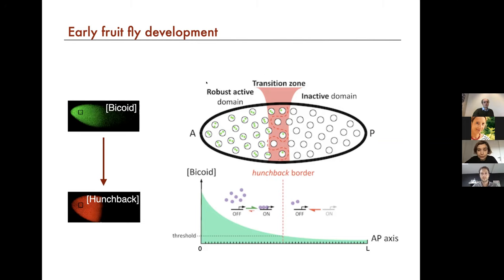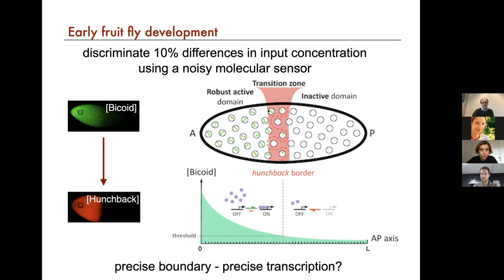You basically get this first part of the embryo where you express things from the hunchback gene, and then the second part where you don't. You have this boundary zone or transition zone in the middle. This has been quantified a lot, and it turns out that this regulatory process is able to discriminate 10% differences in the input bicoid concentration. Why is that remarkable? Because 10% is not a lot if you're using a noisy molecular sensor. People have looked at this at the protein level for hunchback, but more recently we also have access to mRNA data.